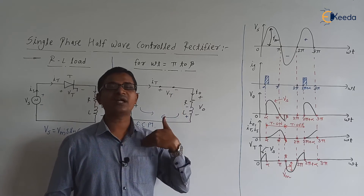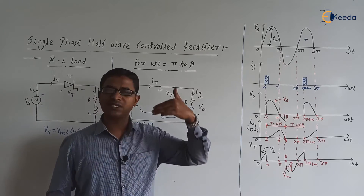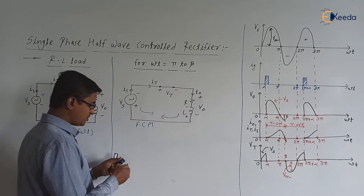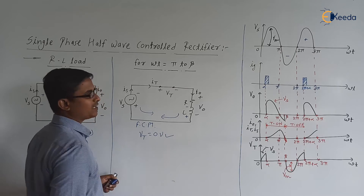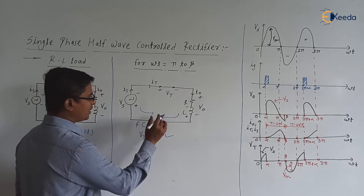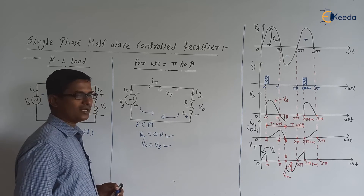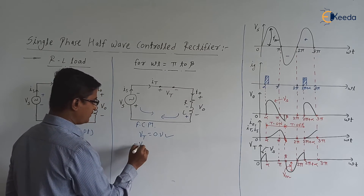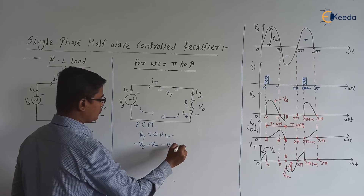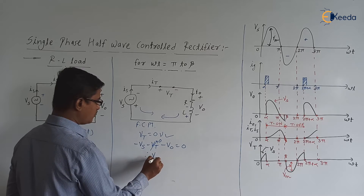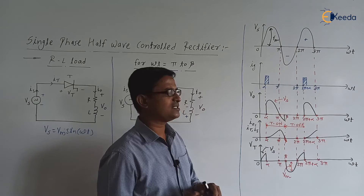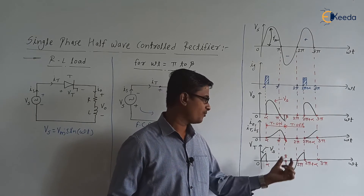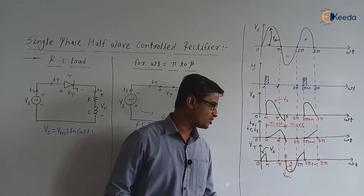From π to β, the inductor is releasing energy, so I₀ goes on decreasing. Vt = 0 V from π to β. Applying KVL: −Vs − Vt − V₀ = 0, with Vt = 0, so V₀ = −Vs. Load voltage is negative but same magnitude as the supply voltage. From π to β: I₀ and It decrease, Vt = 0.